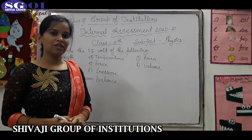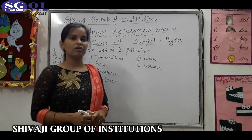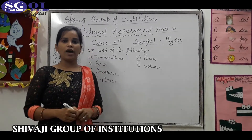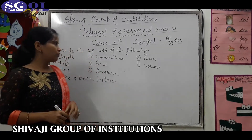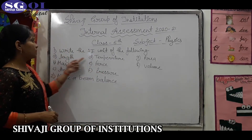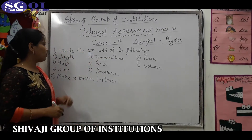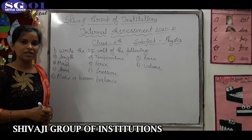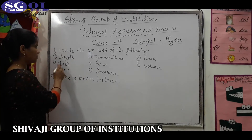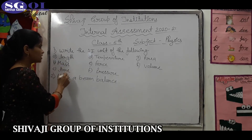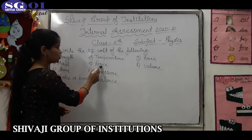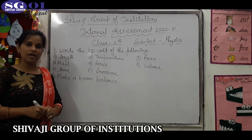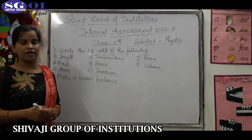Now I am telling you about the physics project file. The first question is: write the SI unit of the following — length, mass, time, temperature, force, pressure, area, volume. You have to write the SI units of all these quantities.